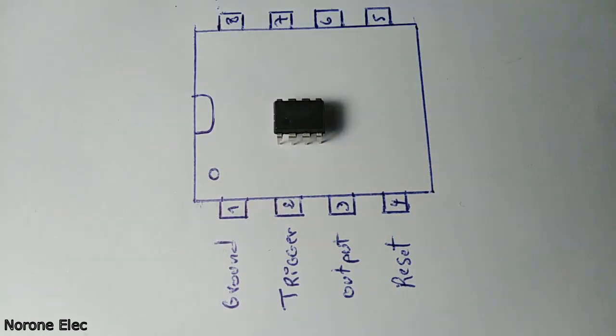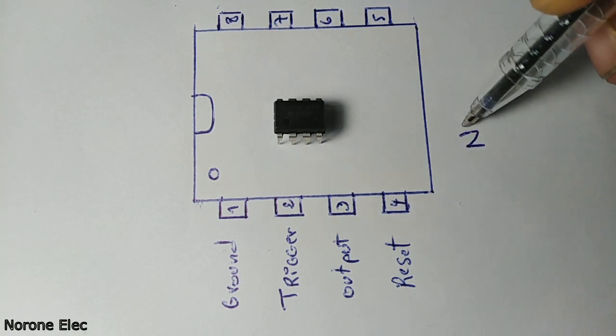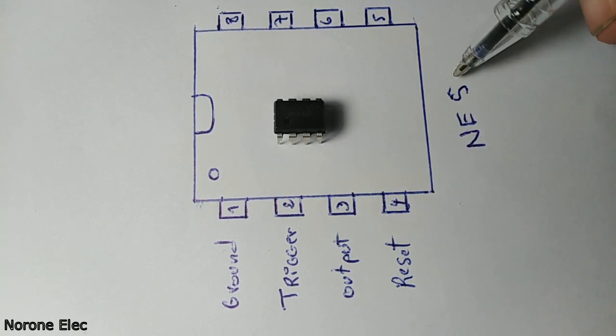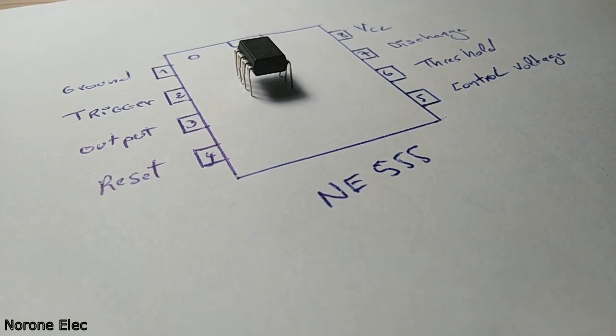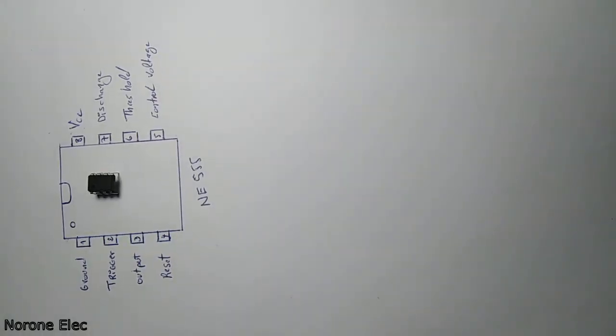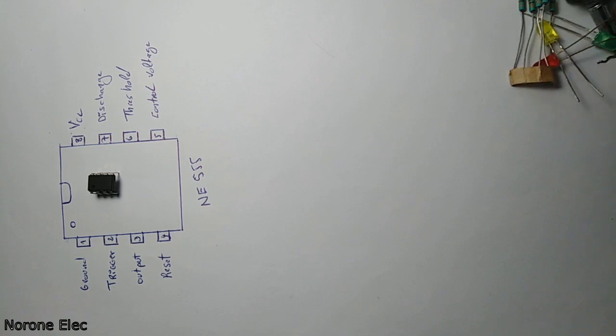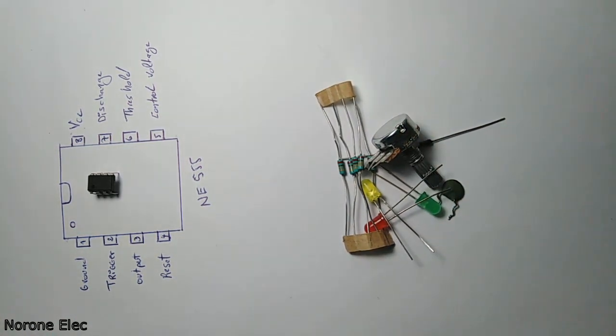First of all, let's talk about the 555 timer IC. A popular version is the NE555. It must be one of the most useful ICs ever made and it is used in many projects. With just a few external components, it can be used to build many circuits.